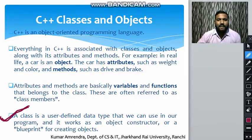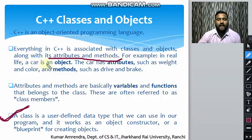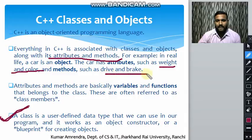Everything in C++ is associated with classes and objects along with its attributes and methods. Attributes and methods are the data members and member functions that belong to the class. For example, in real life a car is an object and the car has attributes such as weight and color, and methods such as drive and brake apply.